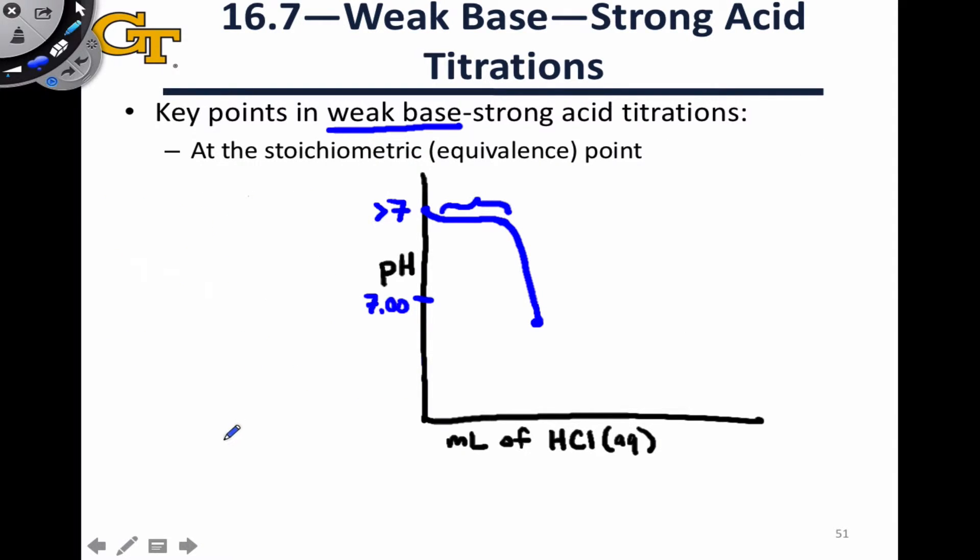At the equivalence point in a weak base titration, the pH is less than 7. This will always be true for titrations of weak bases with strong acids. To understand why, we only need to think about what species are present here.